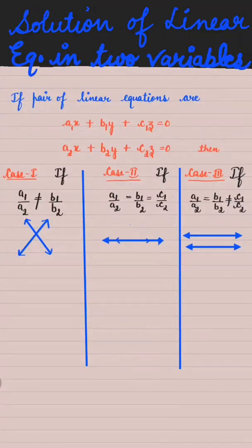If a pair of linear equations are a1x plus b1y plus c1 equals 0 and a2x plus b2y plus c2 equals 0, then Case 1: if a1 over a2 is not equal to b1 over b2, means ratio of coefficient of x and ratio of coefficient of y are not equal.